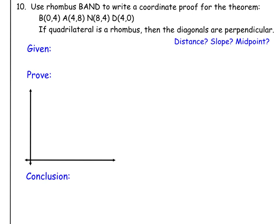In this video we are doing a coordinate proof using rhombus BAND. It says if a quadrilateral is a rhombus then the diagonals are perpendicular.